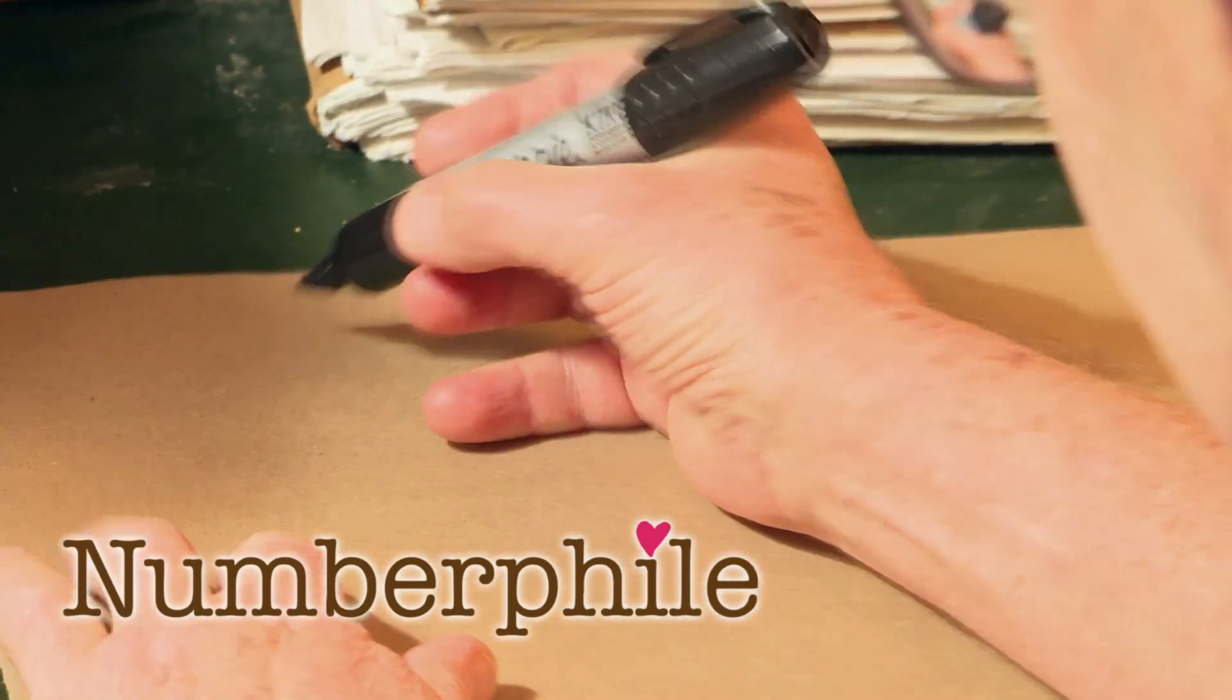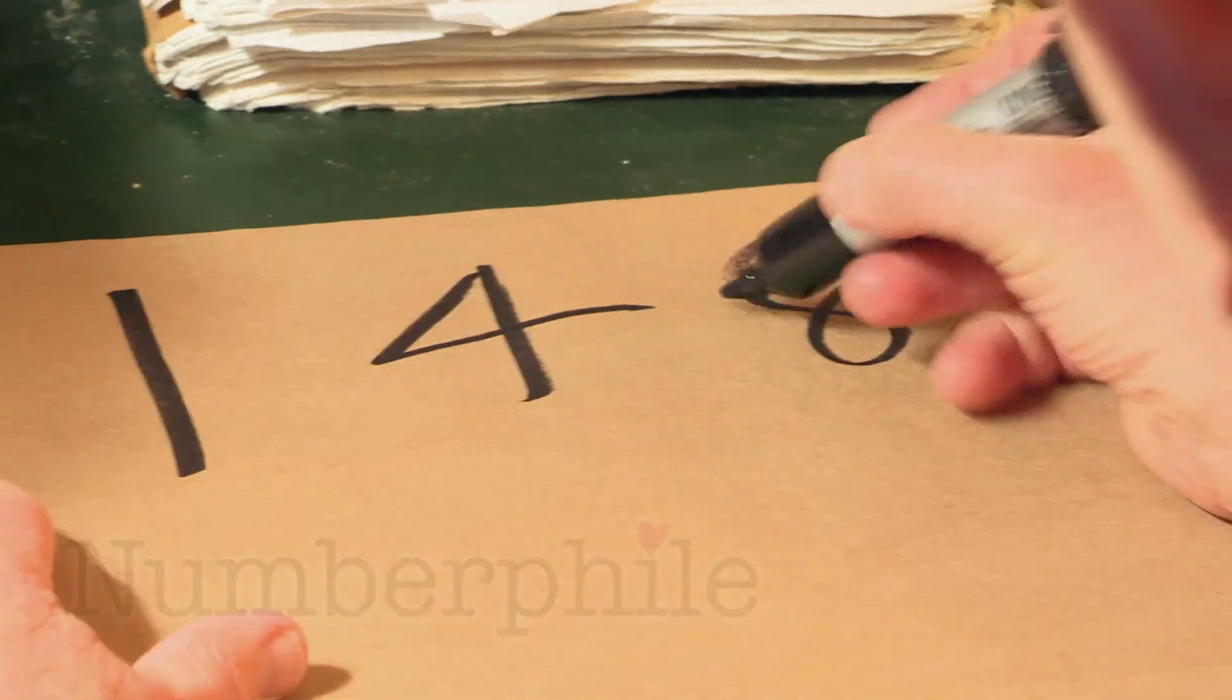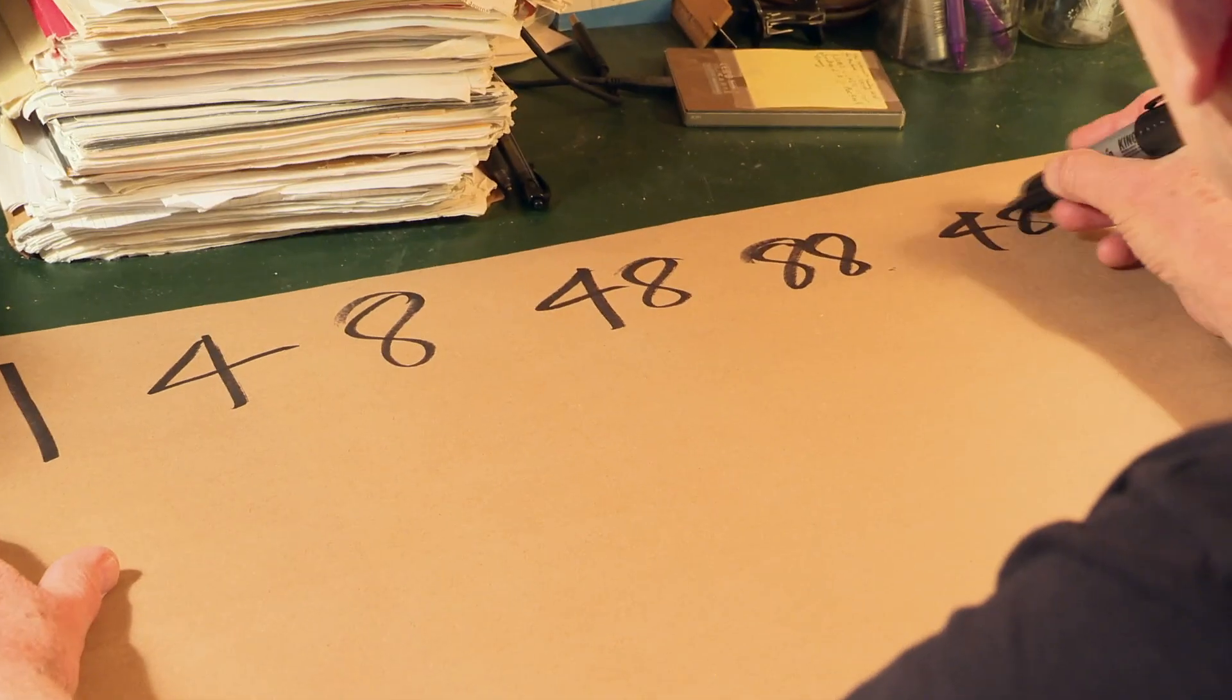What's the next term in the following sequence? It goes 1, 4, 8, 48, 88, 488.